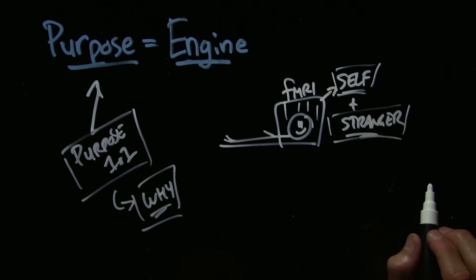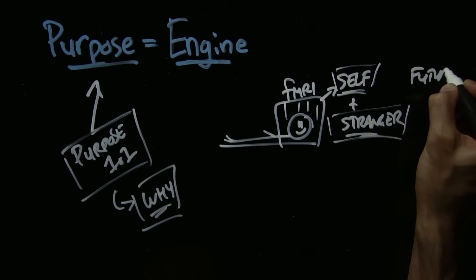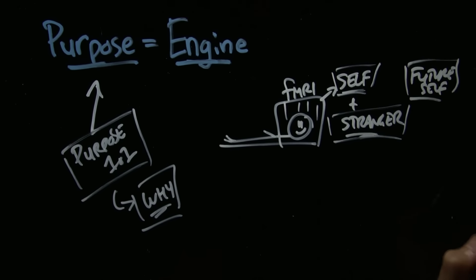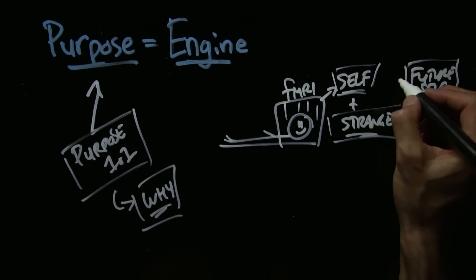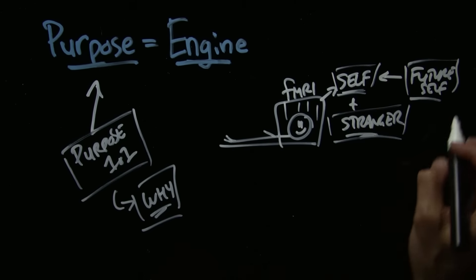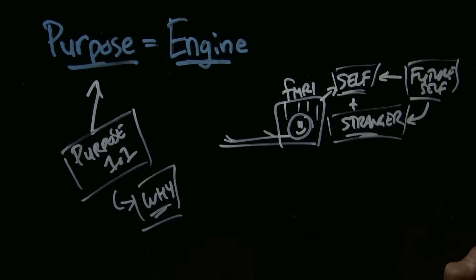Then he says, now think about your future self. And this is the whole study. What he wants to see is when someone thinks about their future self, does it look more like themselves or does it look more like a stranger?